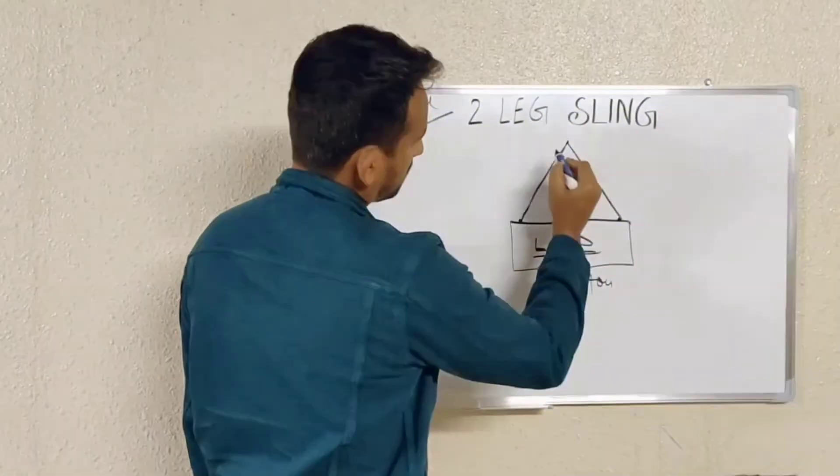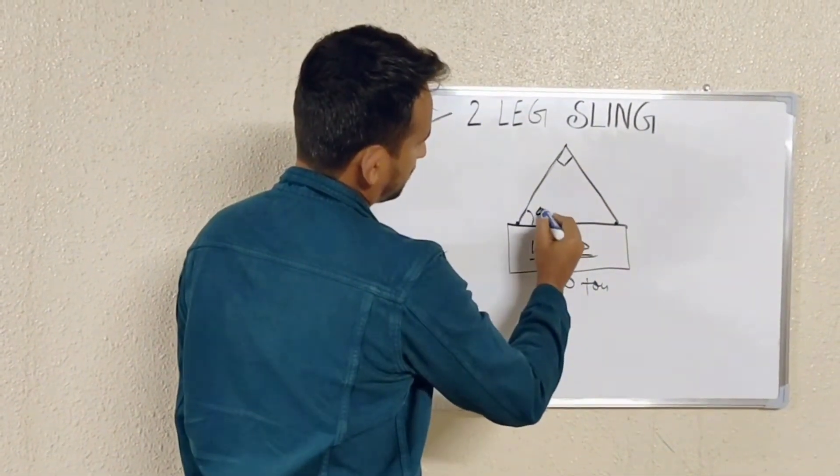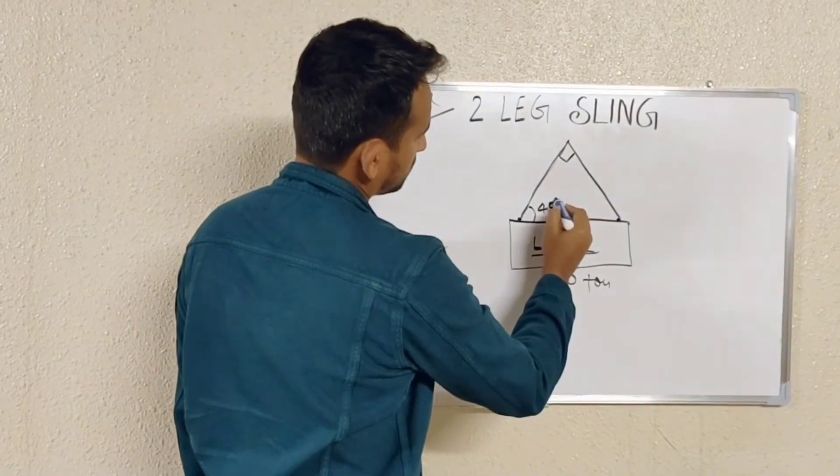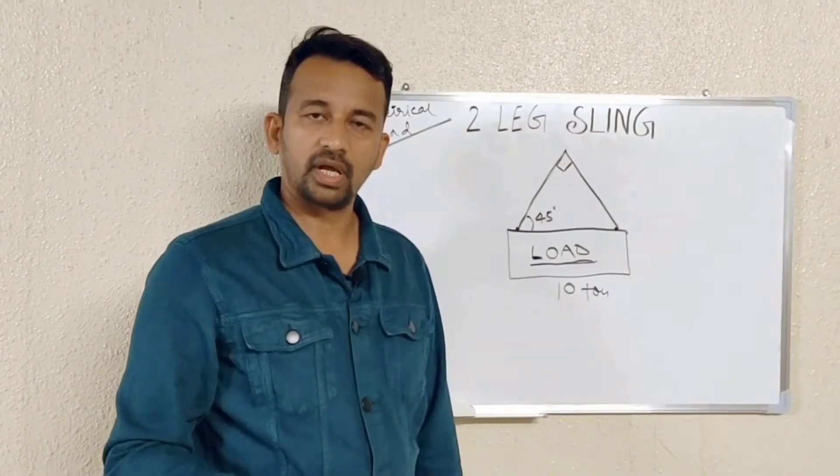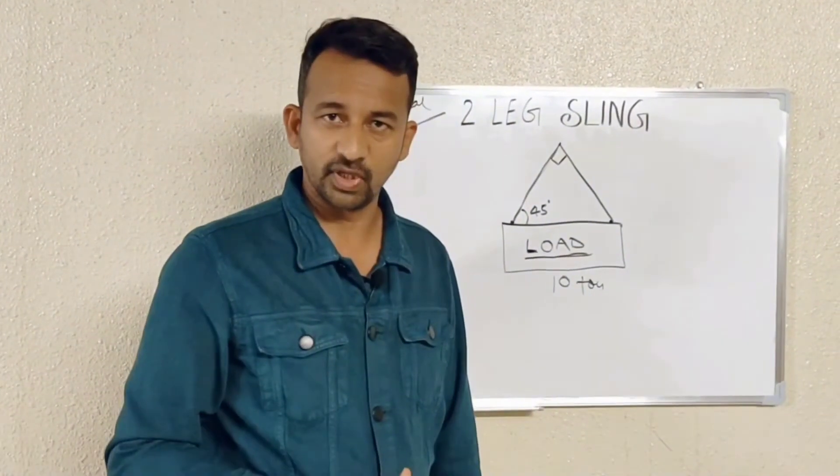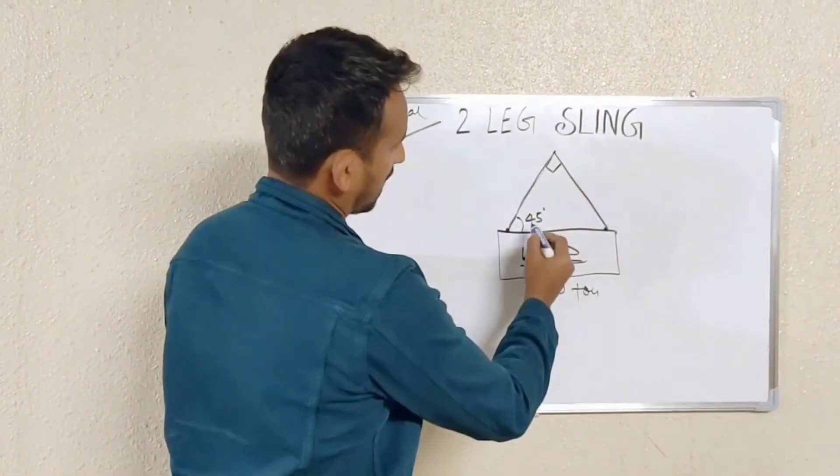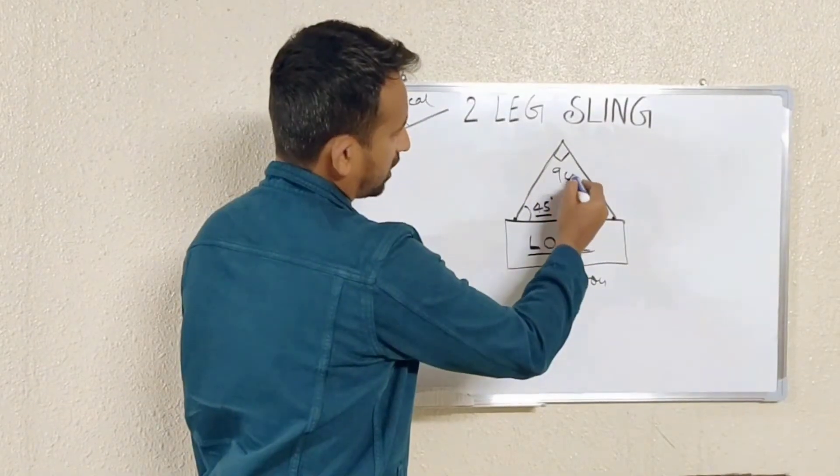Now I have here two-leg sling and my sling angle 45. I have already covered and explained how to maintain the sling angle 45 in my previous video. So we have here sling angle 45 degree, or say 90 degree included angle.